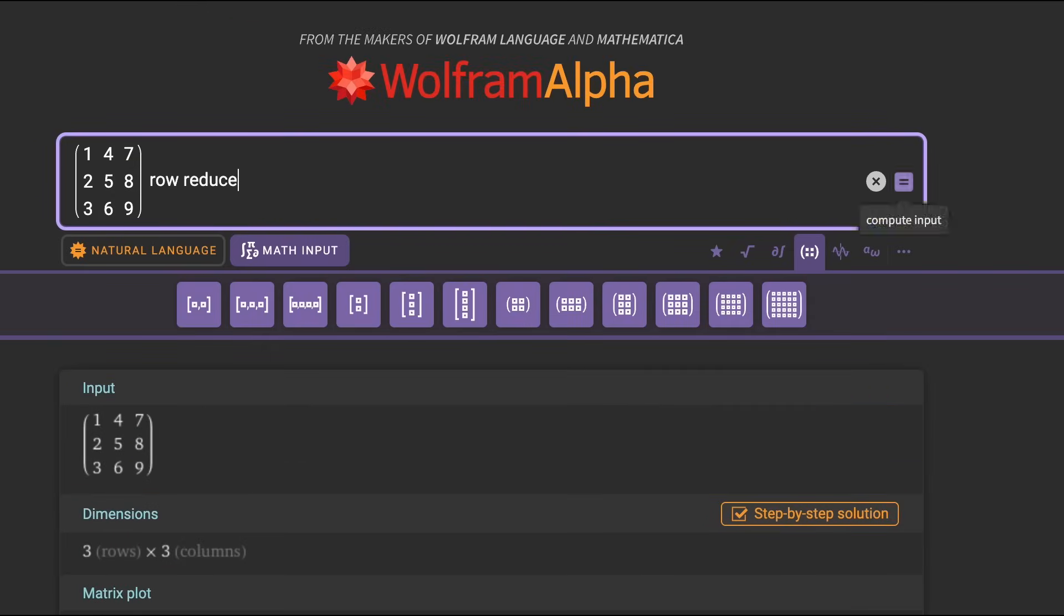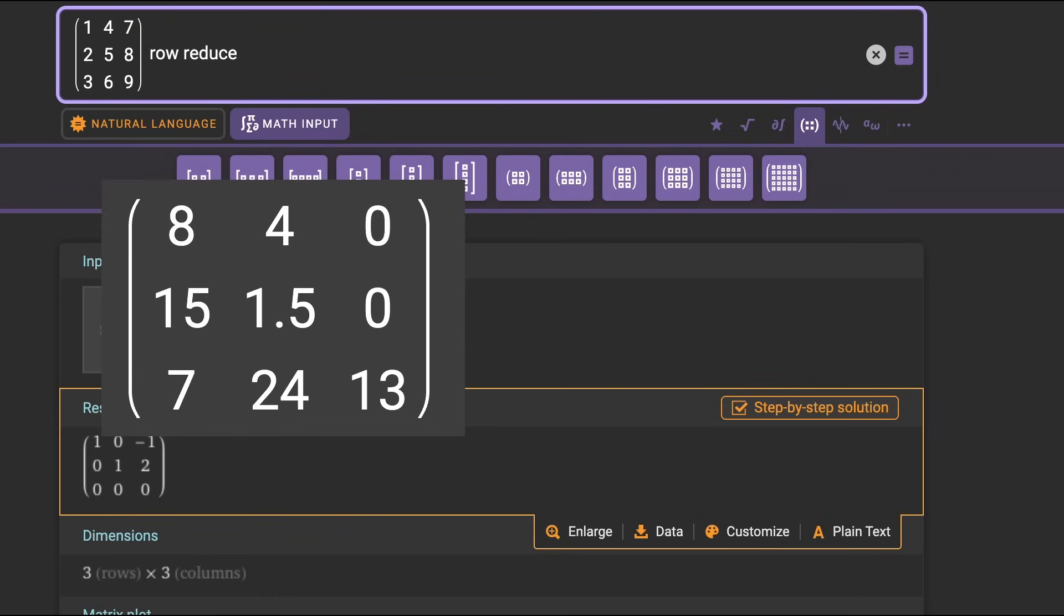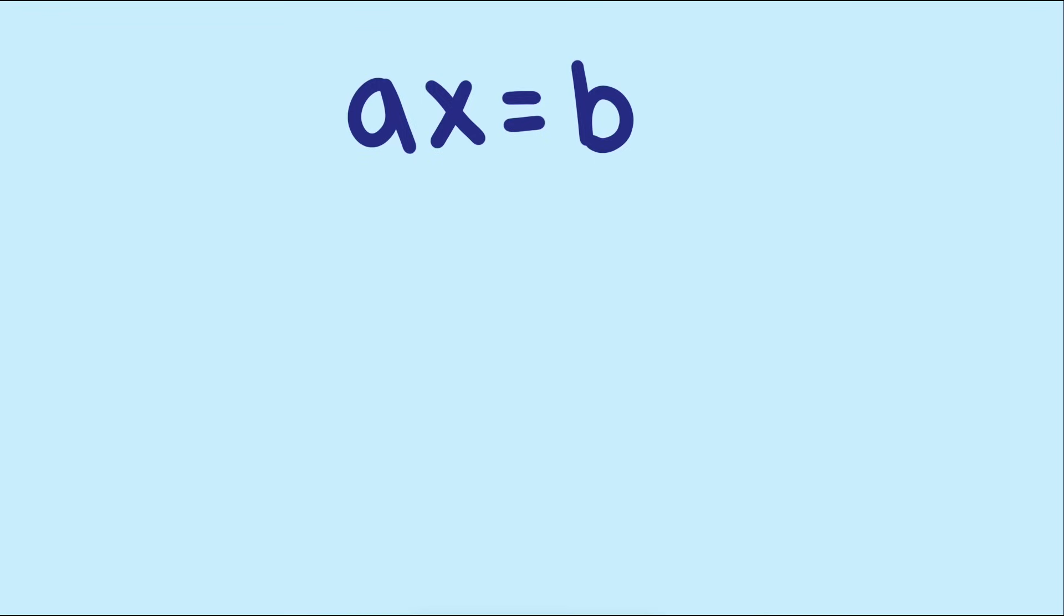If we have it row reduce this matrix, then we start to see what's happening. It doesn't row reduce to the identity matrix, so there's no way to complete the inverse finding algorithm. But why would some matrices have an inverse and others not?